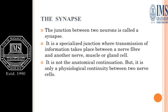In the previous session we discussed the conduction of nerve impulse. So the junction between two neurons, as we have seen in the structure of the neuron, is known as the synapse. It is a specialized junction where the transmission of a nerve impulse, or information, takes place between a nerve fiber and another nerve fiber, a muscle cell, or a gland cell.